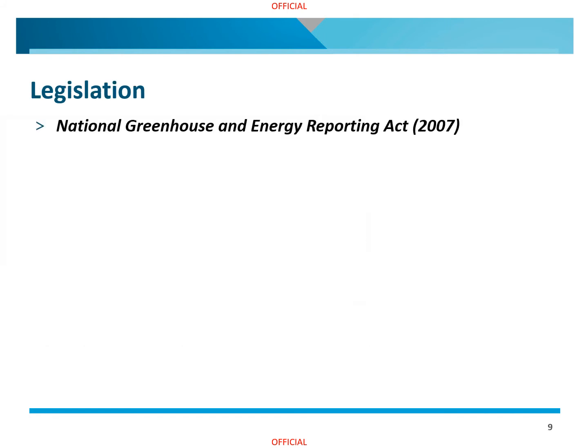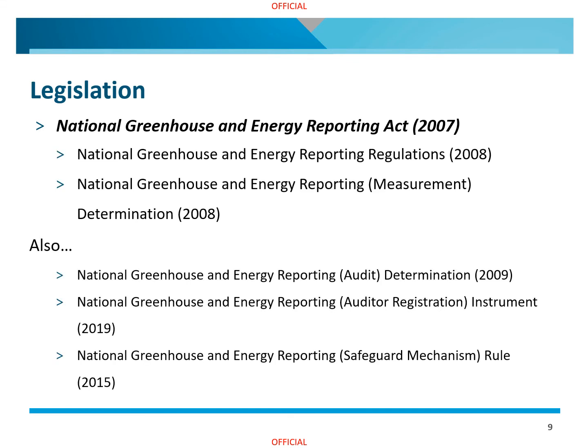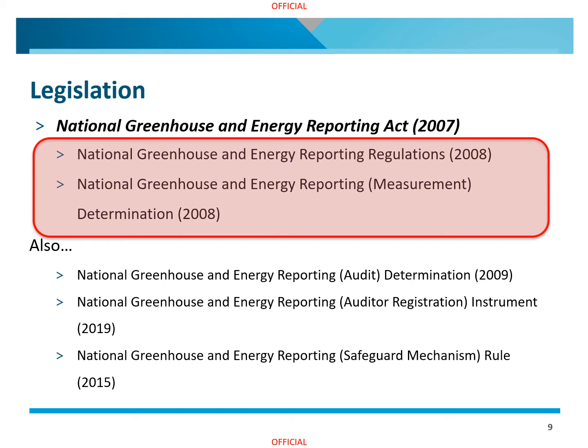The NGER Act applies to corporations that meet reporting thresholds. There are six major elements to this legislation that we have the responsibility to administer. These include registration, reporting, record keeping, monitoring and compliance, data publication and the audit framework. Several legislative instruments sit under the NGER Act providing specific requirements for reporting. The instruments of most relevance include the NGER regulations and the NGER determination. The NGER regulations specify the information that must be provided in reports and the way in which the NGER Act must be applied. The NGER determination provides methods, criteria and measurement standards for calculating greenhouse gas emissions and energy data.